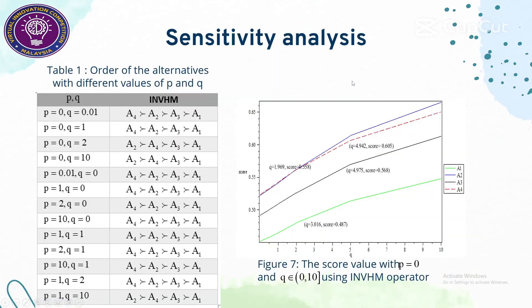For the sensitivity analysis, based on figure seven, the findings show that the ranking order is sensitive to changes in the parameters P and Q. Thus, it is a reliable aggregation operator in decision making.